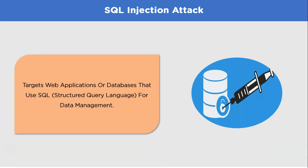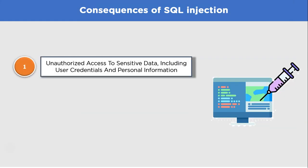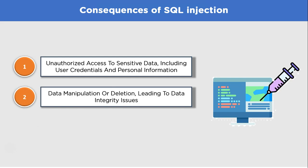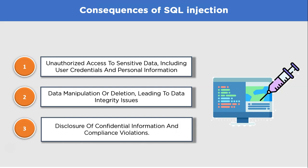Finally on the list, we have SQL injection. SQL injection is a web application vulnerability that allows attackers to manipulate a website's database by injecting malicious SQL code into input fields, leading to unauthorized access, data theft, or data manipulation. If successful, the database may execute the attacker's injected SQL code alongside a legitimate query, granting unauthorized access, modifying or deleting data, or compromising the entire database. SQL injection exploits poorly sanitized user inputs in web applications. Consequences include unauthorized access to sensitive data including user credentials, data manipulation or deletion, and disclosure of confidential information. In 2008, SQL injection was used to breach Heartland Payment Systems, resulting in the theft of millions of credit card records.